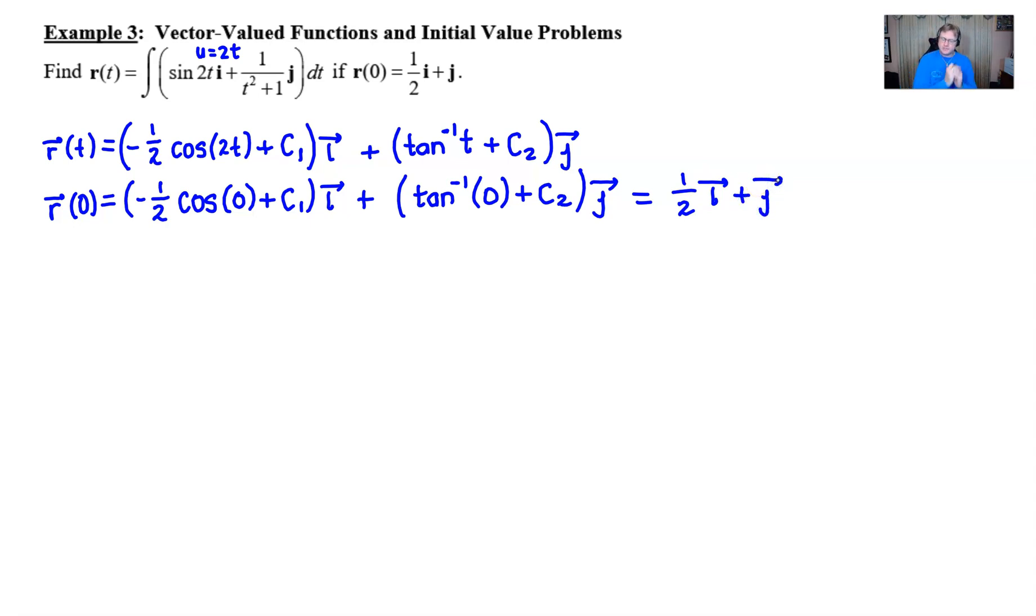Well, we actually finished simplifying this. Knowing the cosine of 0 is 1, we get negative 1 half plus c1 times i. And then hopefully over here you're somewhat comfortable with the fact that the inverse tangent of 0 is 0. Tangent has one of those relationships that the tangent of 0 is 0, the inverse tangent of 0 is 0 also. So really we just have c2 times j. And all of that is equivalent to 1 half i plus 1 j.